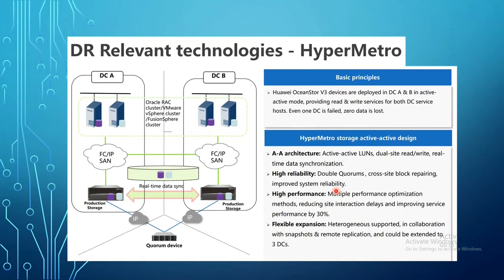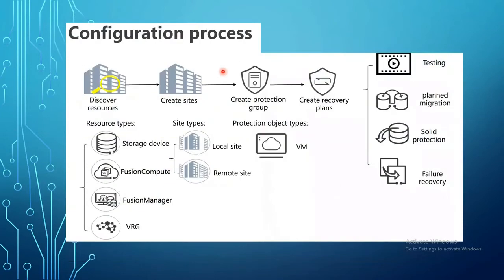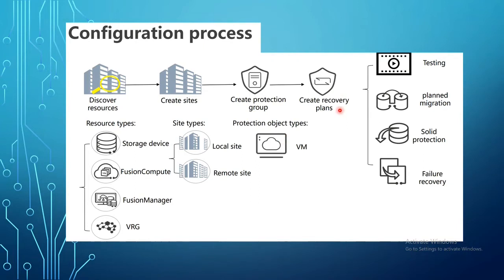In BC Manager, the configuration workflow is straightforward: first discover resources — storage devices, compute, FusionSphere Manager, VRM, etc. Then create a local site (primary) and remote site (DR). Next, create protection groups specifying which VMs to protect — for example, Exchange or ERP servers in separate groups. Finally, create a recovery plan which enables DR drill, planned migration, solid protection, and failure recovery.